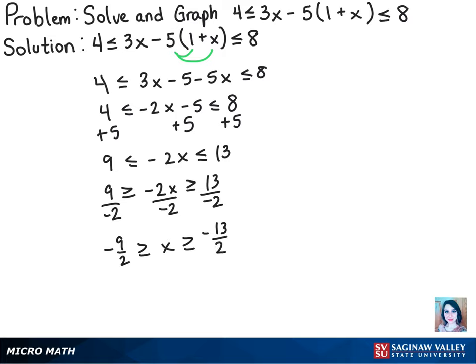Now just for ease of reading I prefer to write mine the other way so that the smallest number is on the left with negative 13 halves is less than or equal to x is less than or equal to negative 9 halves.